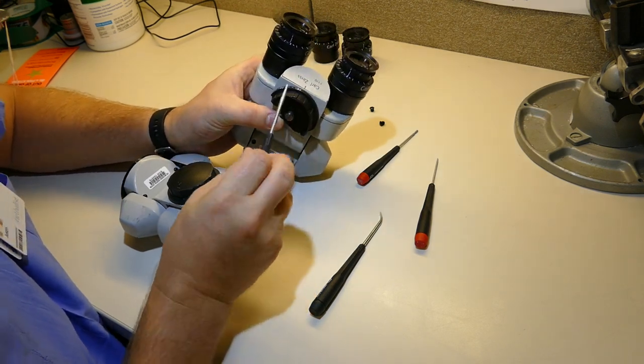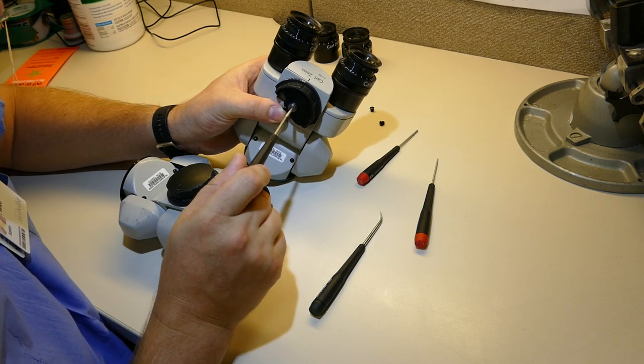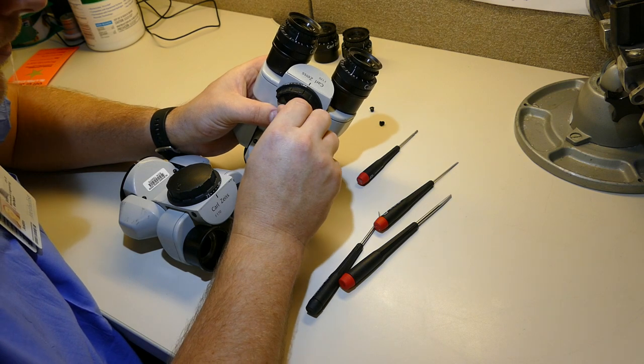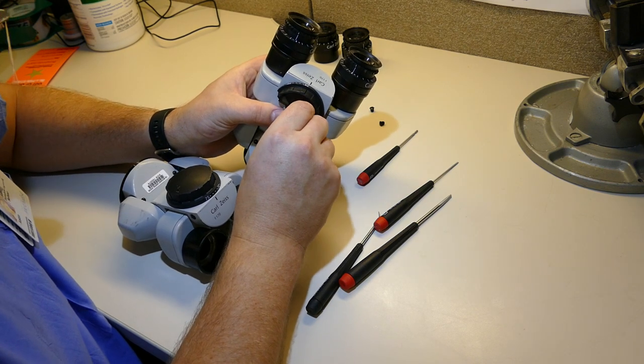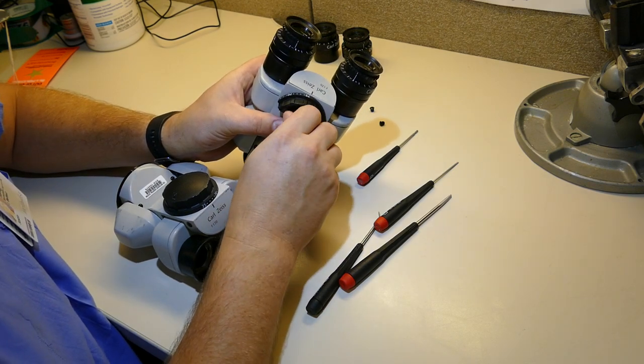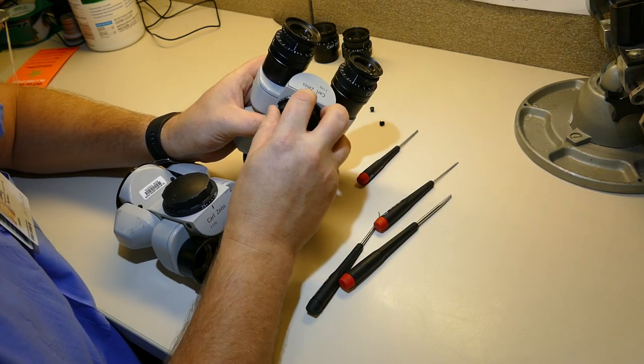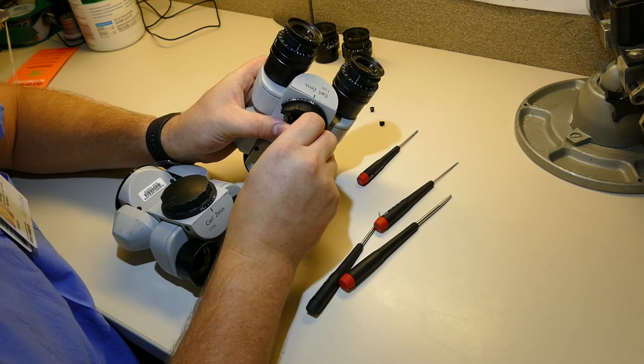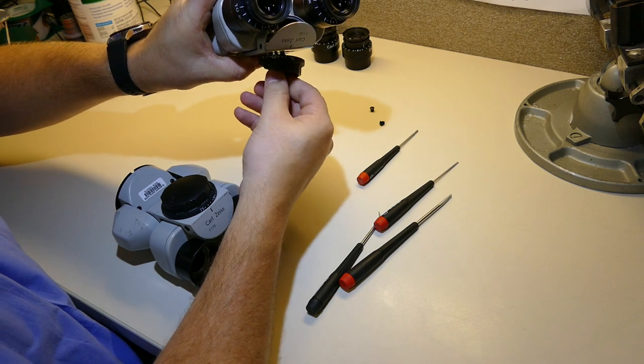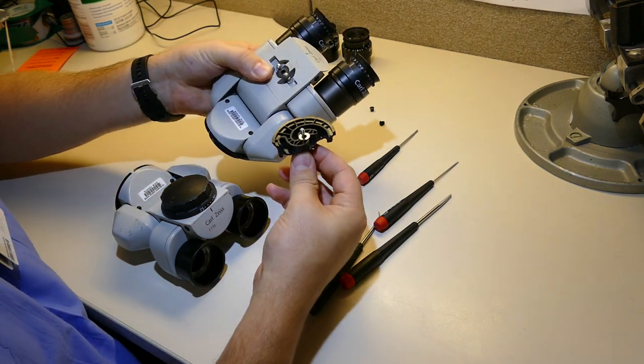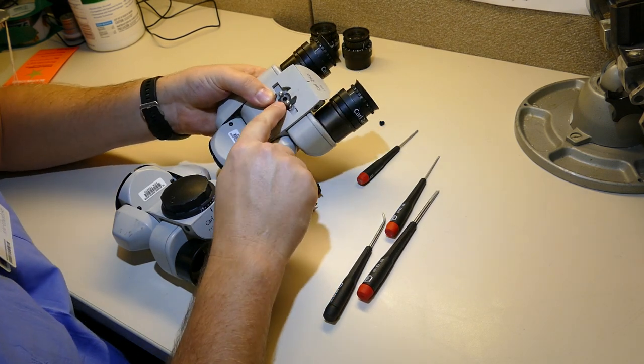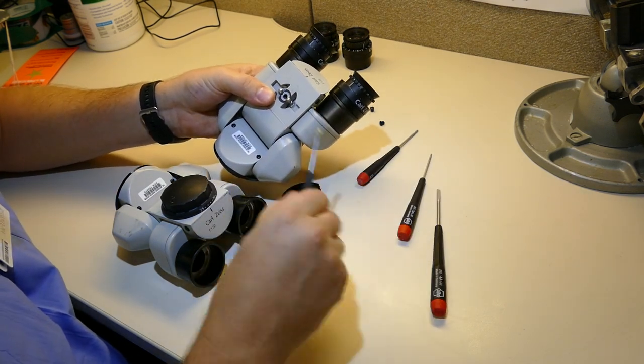I'm going to remove the screw that's holding the IPD adjustment knob. Now, you want to be careful because there's a series of spacers and flat washers above and below the IPD knob. When I take it out, I usually invert it for the last couple threads and pull it out. Here you can see I got one flat washer on the knob and one stuck to the base right here.